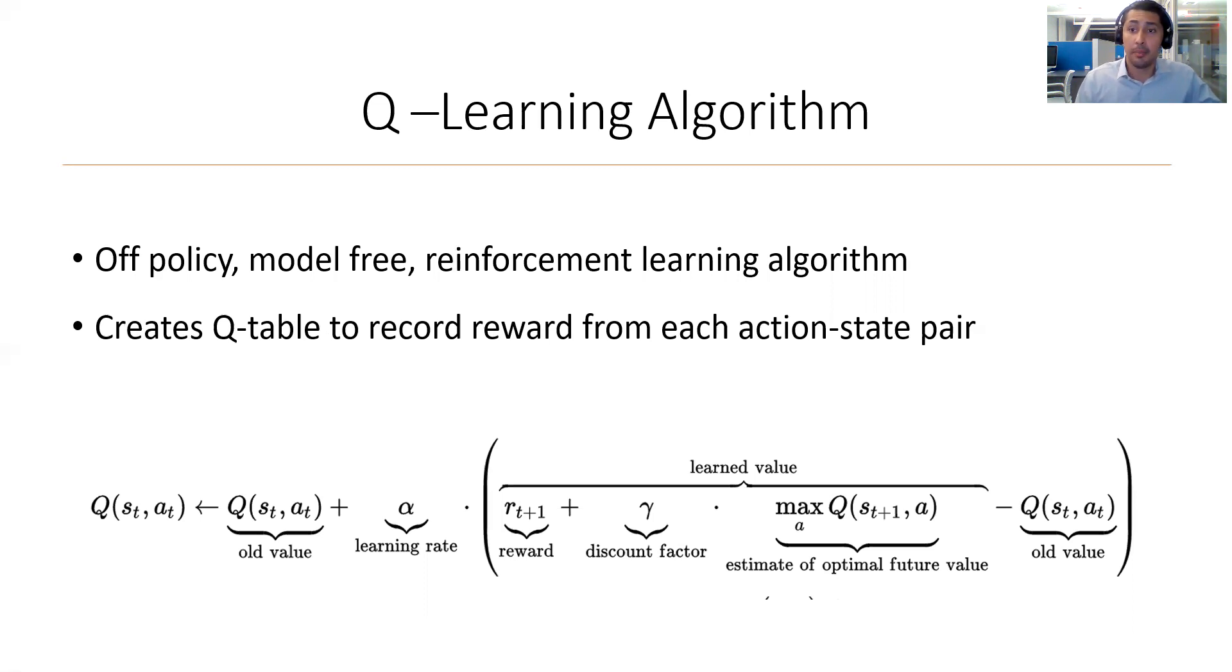It is then summed up with the product of the learning rate and the temporal difference. The temporal difference, being everything inside the parentheses, is defined as the most recent reward obtained from the state action pair plus the discounted value of what would be the estimated future value for the next step minus the old Q value. This process lets the agent learn based off its action and determine what is the best action given the state.